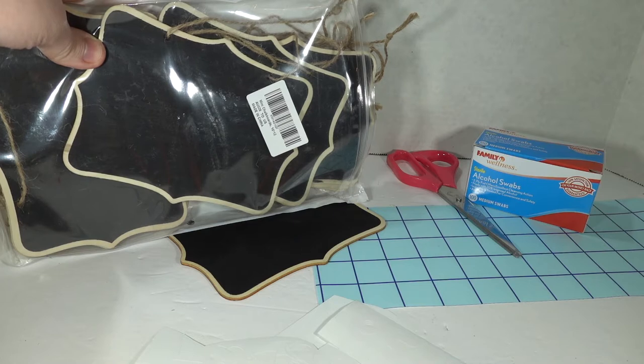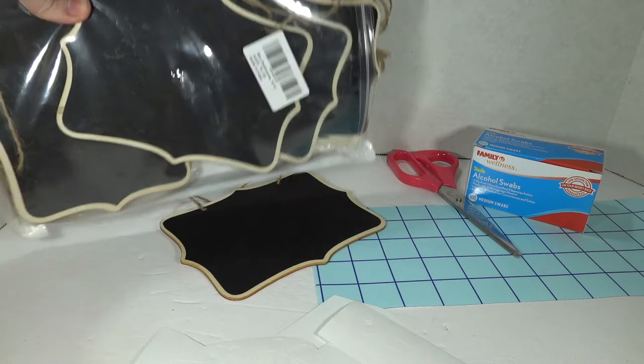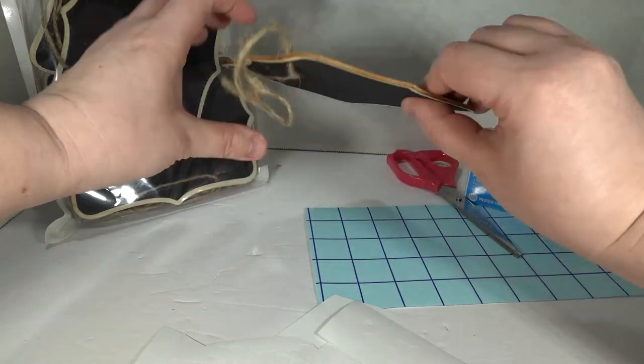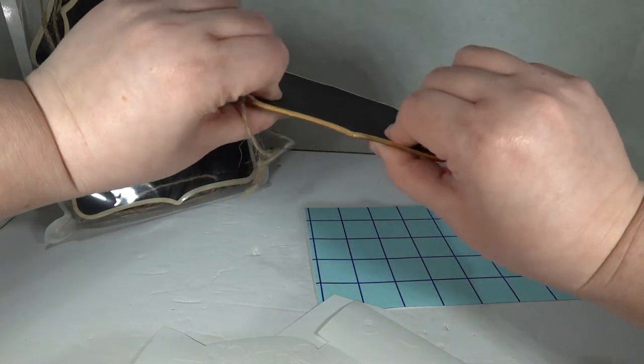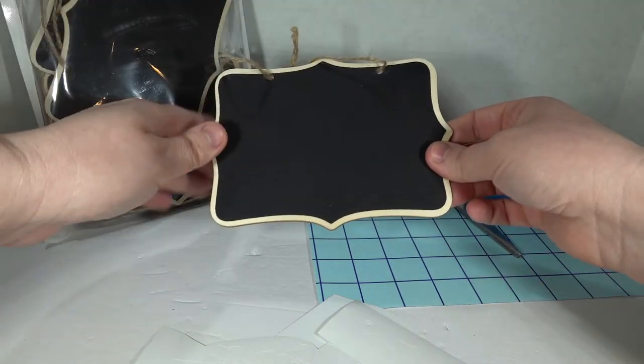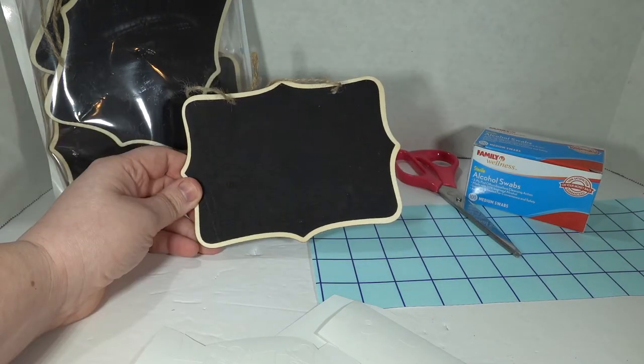These hanging chalkboards are about four inches by six inches. I'll put a link in the description below for where you can get them off of Amazon, but they are two-sided. They're a tiny bit thin, not exactly flimsy, but I wouldn't put a lot of weight or pressure on it. You can actually write on them with chalk if you want to, but I wanted everything to look neat and uniform.